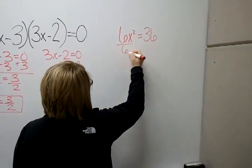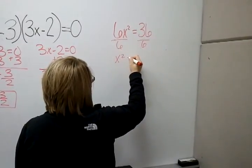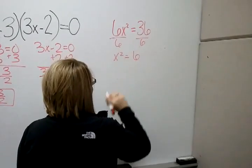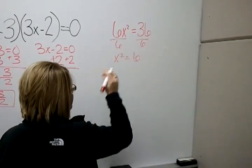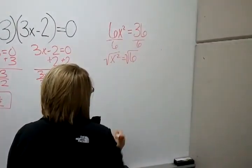So we're going to divide by 6 on both sides which gives us x squared equals 6. We want to get rid of the x squared. So in order to do that we have to take the square root of both sides.